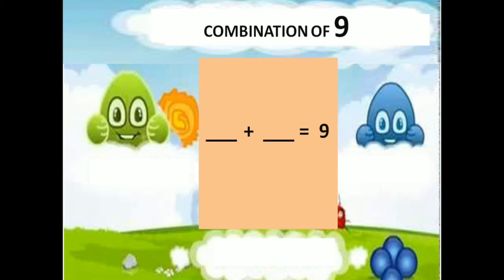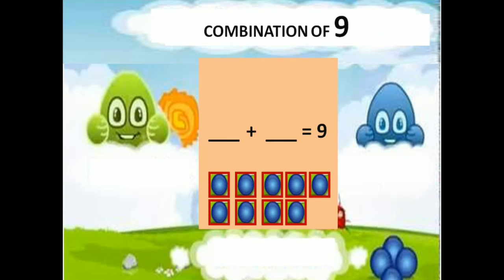Combination of 9 — you add 2 numbers, you get the answer 9. What are the combination numbers? You add, you get 9. We are going to discuss. Using 9 balls, we can easily find out what are the combinations of 9.